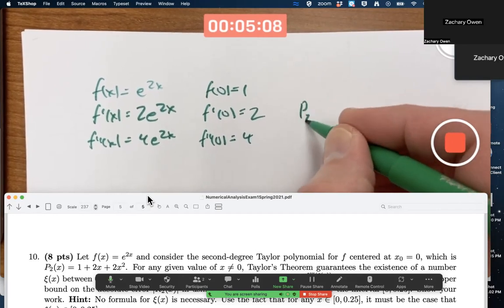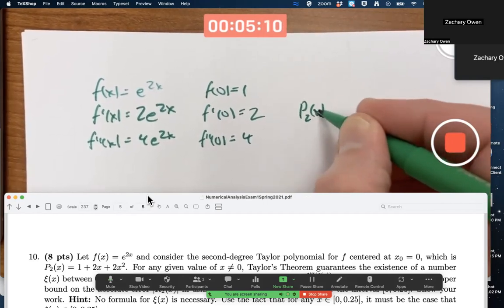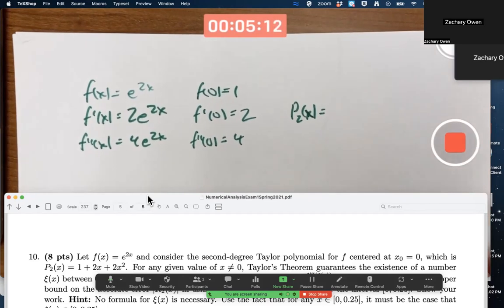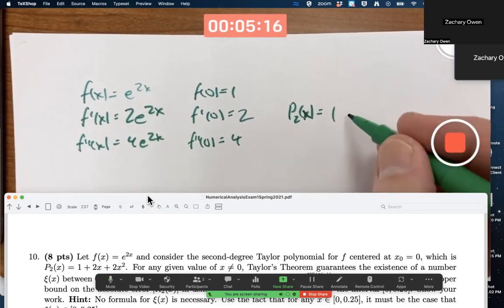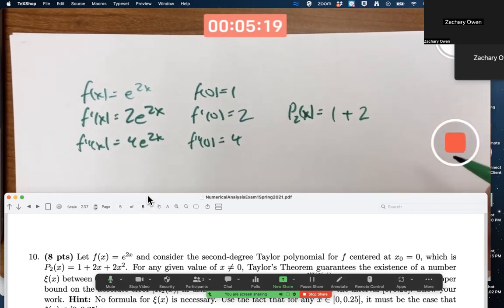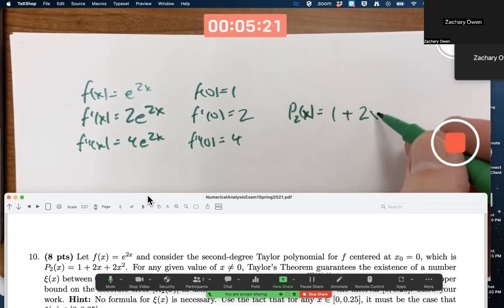So the second degree Taylor polynomial, call it p2 of x centered at zero, is going to be, first of all, f of zero is 1, plus f prime of zero times x minus zero, which of course is just x,